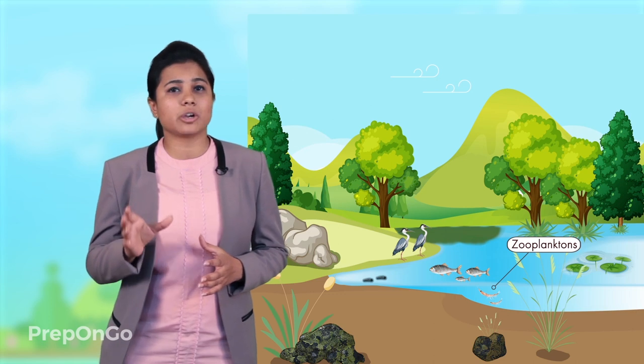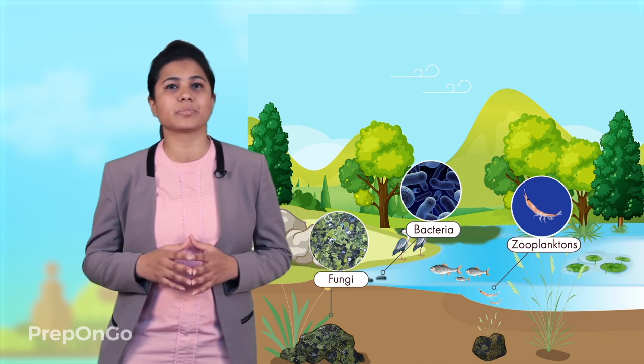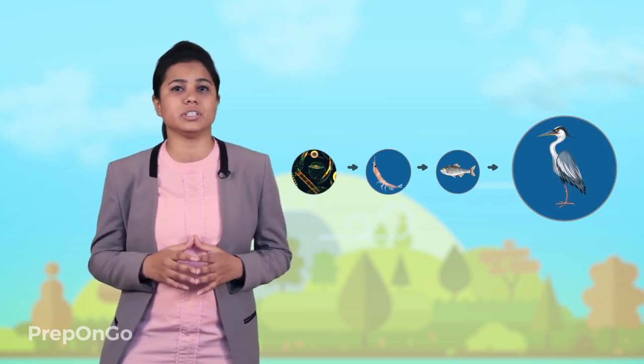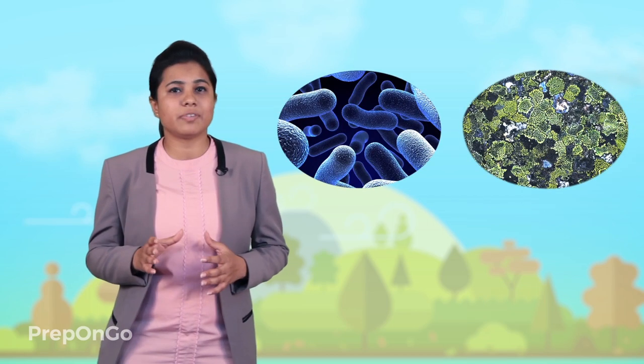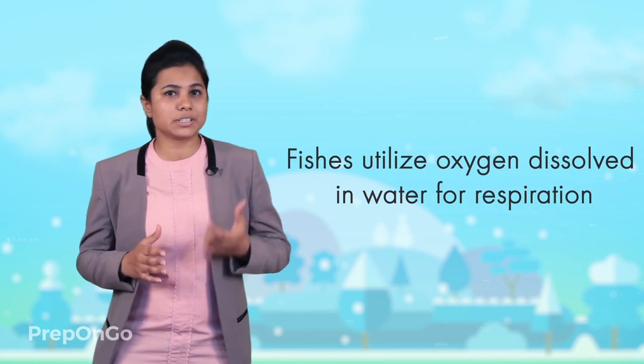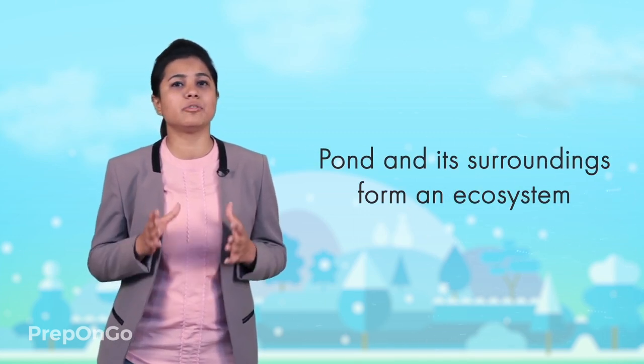There are also organisms which cannot be seen directly with the eyes. They include the tiny aquatic animals called zooplanktons, and different bacteria and fungi. All these living organisms are interdependent on each other. For example, zooplanktons eat phytoplanktons, fishes eat zooplanktons, and the birds eat fishes. Bacteria and fungi decompose the dead animals and plants. These animals also interact with the physical environment — for example, fishes utilize the oxygen dissolved in the water. Since all these organisms are interacting among themselves and with the surrounding environment, we can say that the pond and its surrounding environment form an ecosystem.